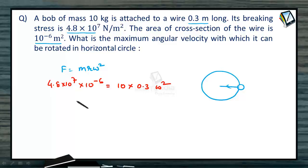So omega square we can calculate from here. Omega square will be equal to 4.8 × 10 divided by 10 × 0.3. This is equal to 16. So omega will be equal to 4 radian per second.